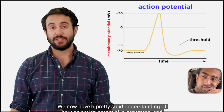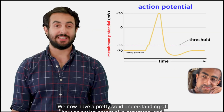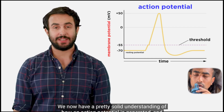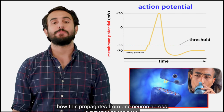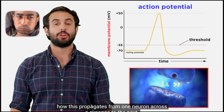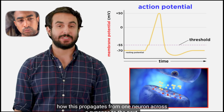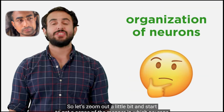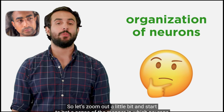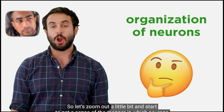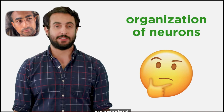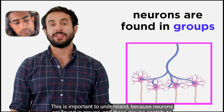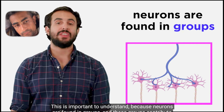We now have a pretty solid understanding of how an action potential is generated and how it propagates from one neuron across a synapse to the next. So let's zoom out a little bit and start to get a sense of the manner in which neurons are organized.